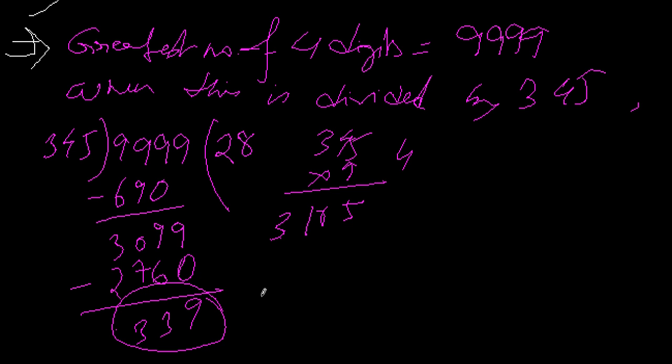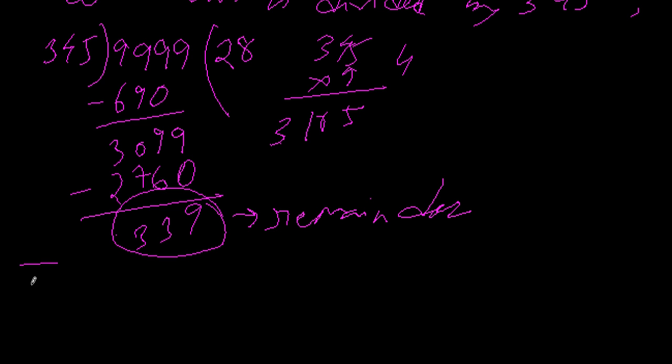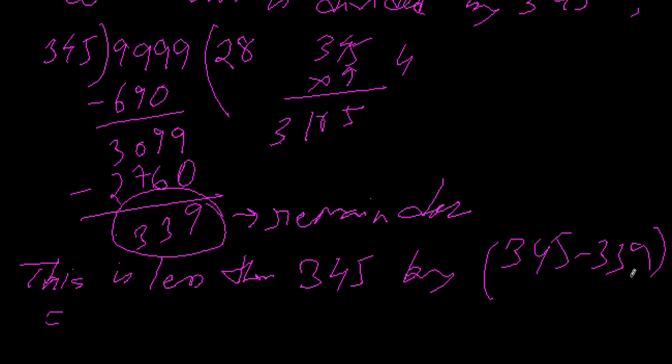So when this is divided by 345, 339 is the remainder. Now this is less than 345 by how much? This remainder is less than 345 by 345 minus 339 equals how much? 5 minus 15, so 15 minus 9 gives me 6. Then 1 is added to 3 makes it 4, 4 minus 4 is 0, then 3 minus 3 is 0. So my difference is 6. That is, this is less than 345 by 6.